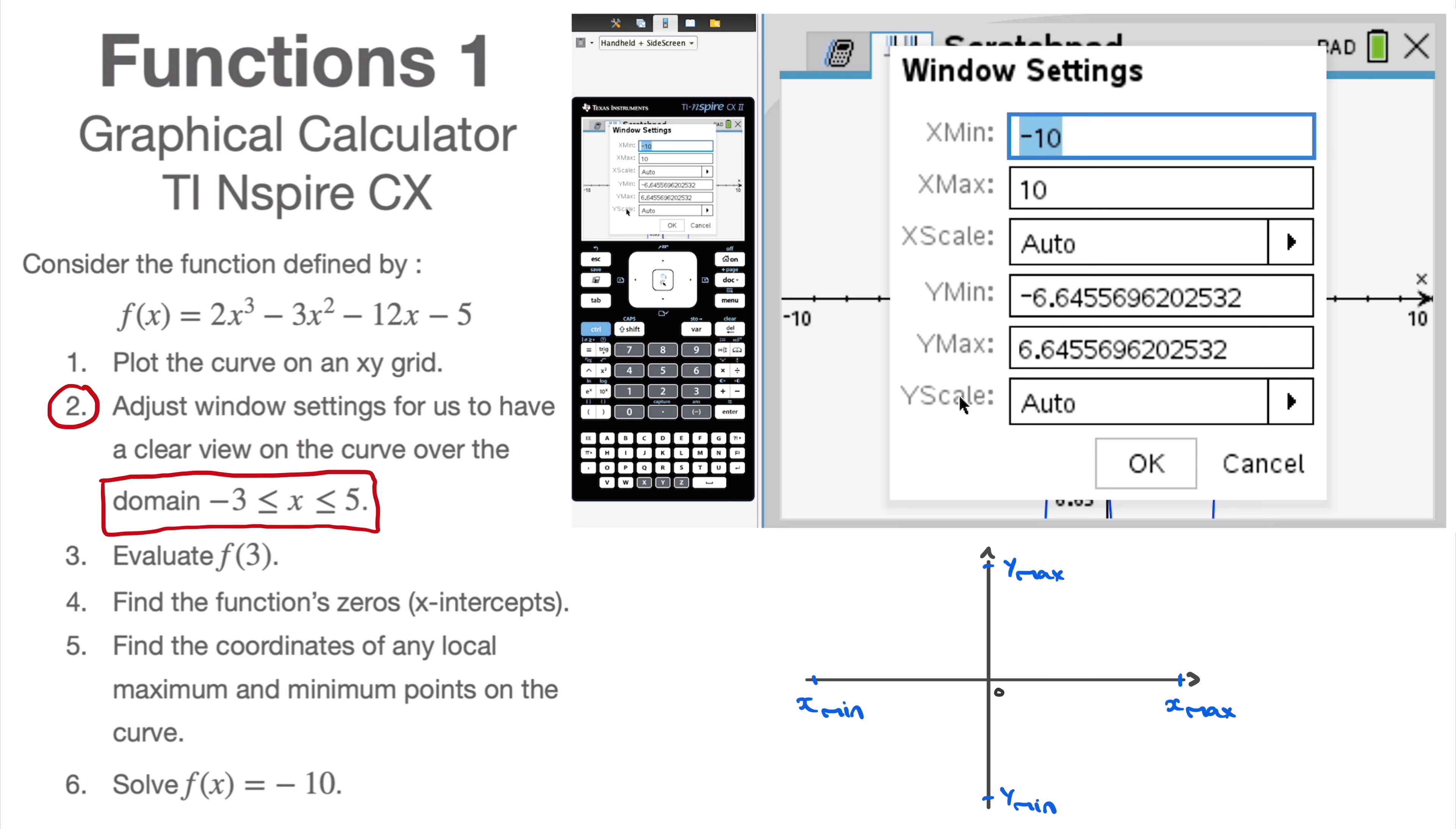So remember, we're told that the domain is all values of x between -3 and 5. So for my xmin, I'll go ahead and type -3. For my xmax, I'll type 5. I'm not going to touch the y values just yet. I will, though, in a second. But for the moment, I'm just entering the domain that was given, and I click on OK.